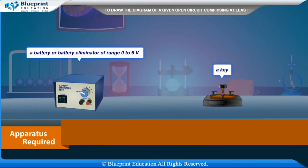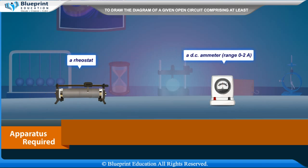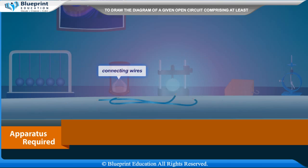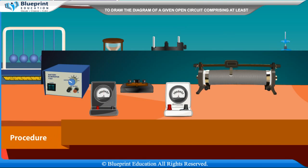Apparatus required: a battery or battery eliminator of range 0 to 6 volt, a key, a rheostat, a DC ammeter of range 0 to 2 ampere, a DC voltmeter of range 0 to 3 volt, resistance wire and connecting wires.